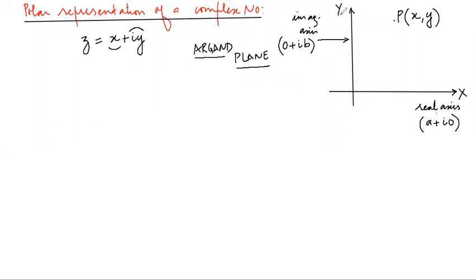Any number on y axis is of the form 0 + ib where b is the imaginary part on this plane and combination of both will give the real representation of a complex number.